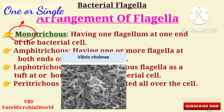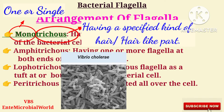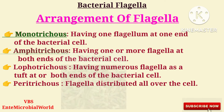Monotrichous bacteria have one flagellum at one end of the bacterial cell. 'Mono' means one or single, and 'trichous' means having a specified kind of hair or hair-like part. Amphitrichous bacteria have one or more flagella at both ends of the bacterial cell.